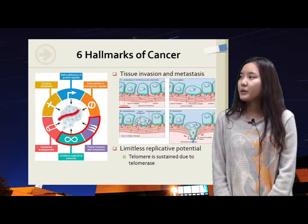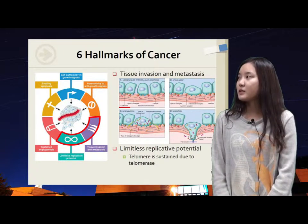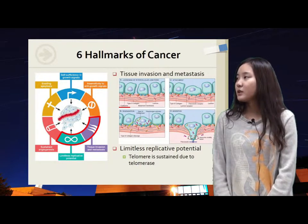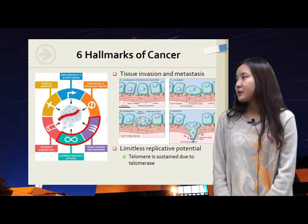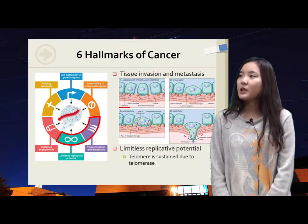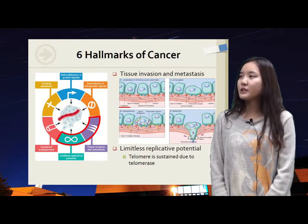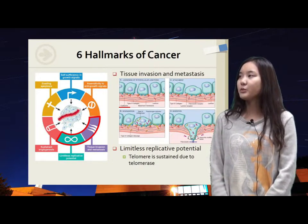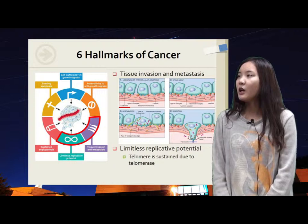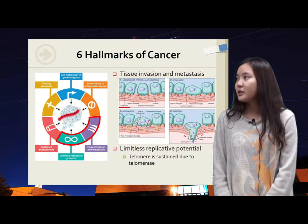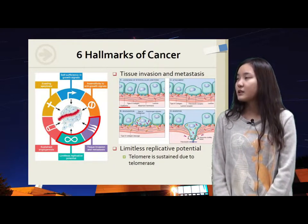Tumor can replicate limitlessly because it has enough amount of telomerase. Usually in normal cells, except stem cells, they do not have telomerase. Therefore, telomere in DNA keeps decreasing as chromosome replication occurs. After all telomere parts disappear, cell cycling stops.